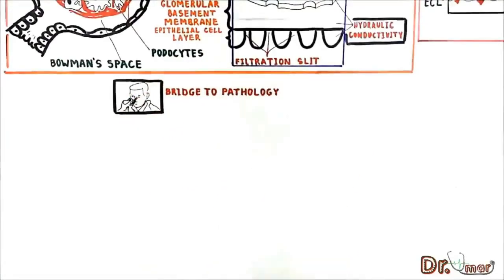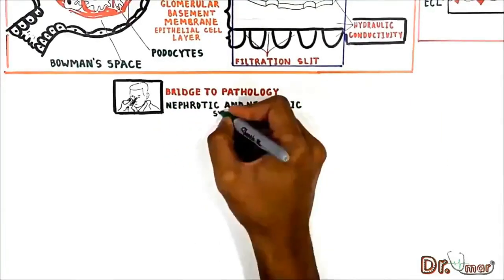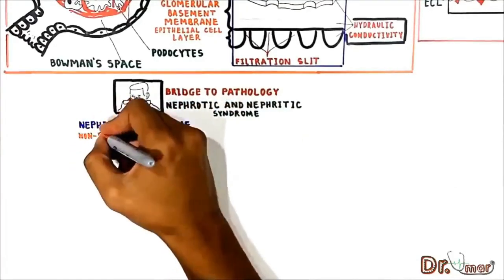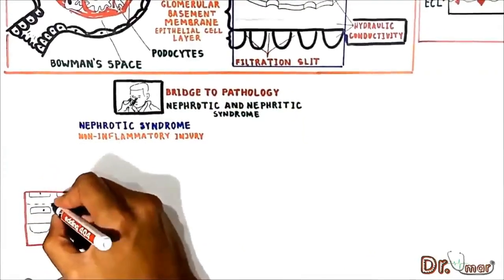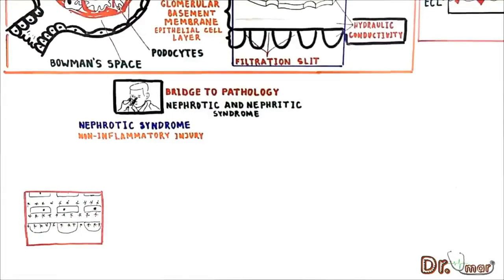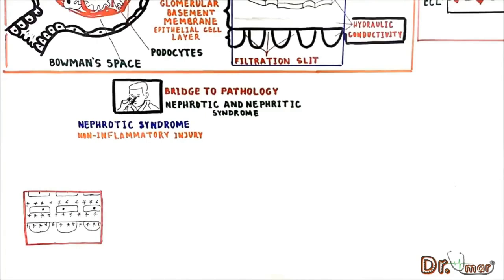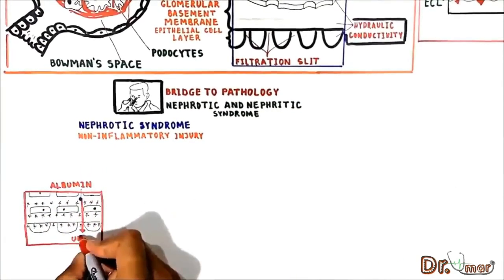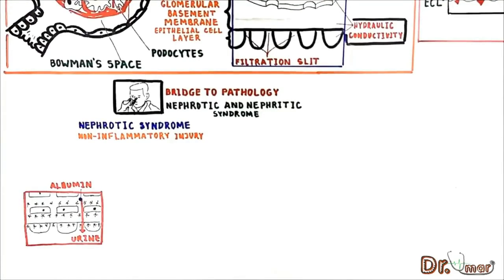There are two important syndromes related to the loss of protein through the glomerular membrane: nephrotic and nephritic syndrome. Nephrotic syndrome is a non-inflammatory injury to the glomerular membrane system. The negative charges on the basement membrane are lost, resulting in lower molecular weight proteins — especially albumin — being filtered and appearing in the urine, a condition known as proteinuria or albuminuria.